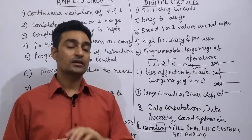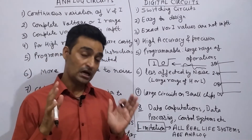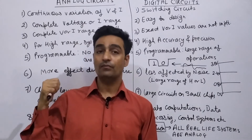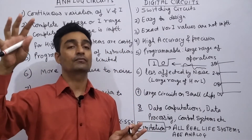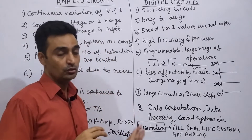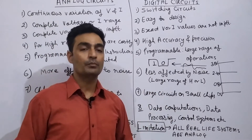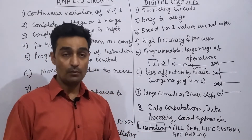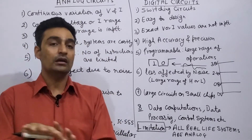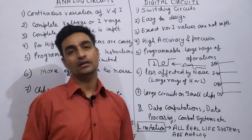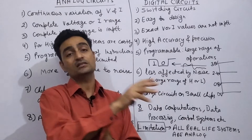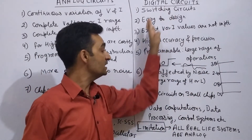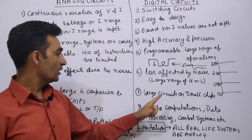Another advantage: large circuits are implemented using smaller chips in digital circuits. Analog circuits require larger chip sizes in comparison. Furthermore, as operating voltages and currents increase, components like capacitors, inductors, and transformers become very difficult to implement on an IC and must be taken outside. In digital circuits, these components can be implemented within the IC itself because operating voltage and current values are very small.